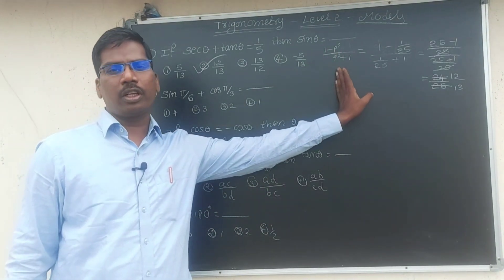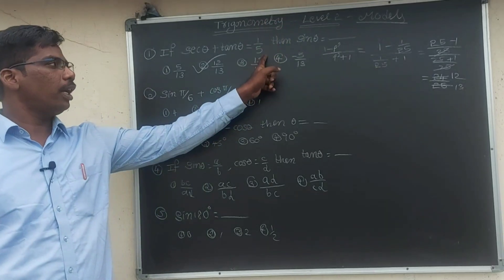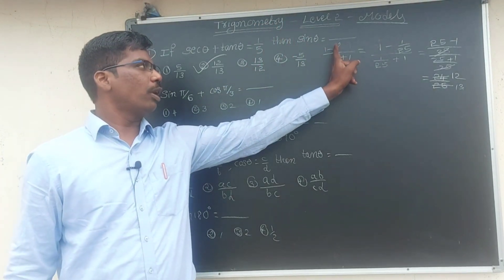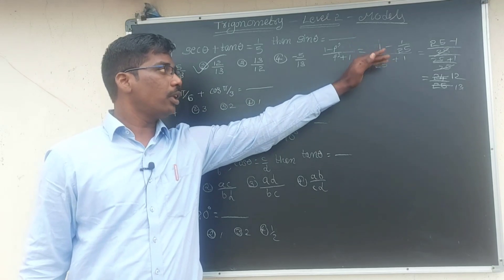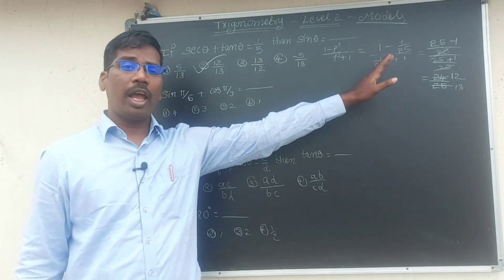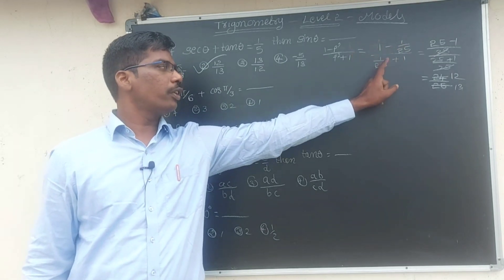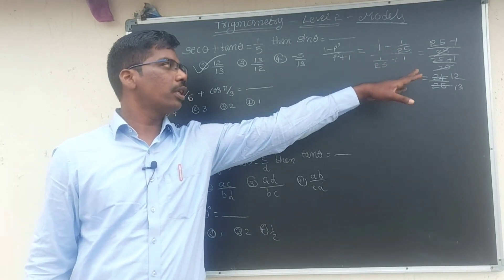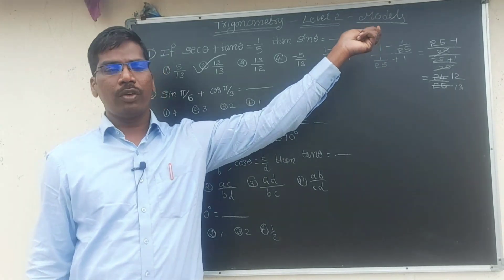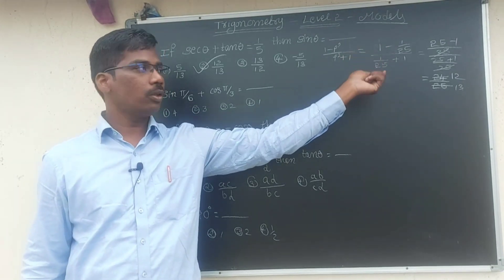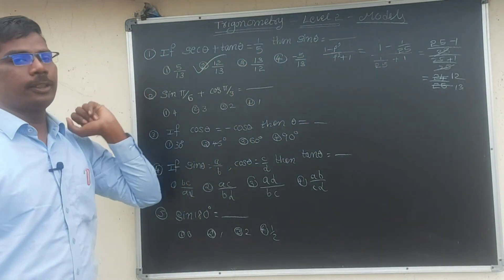So using the formula 1 minus p squared by 1 plus p squared with p value 1 by 5: 1 by 25 substituted in, 25 and 25 cancel, giving us 12 by 13 as the answer.